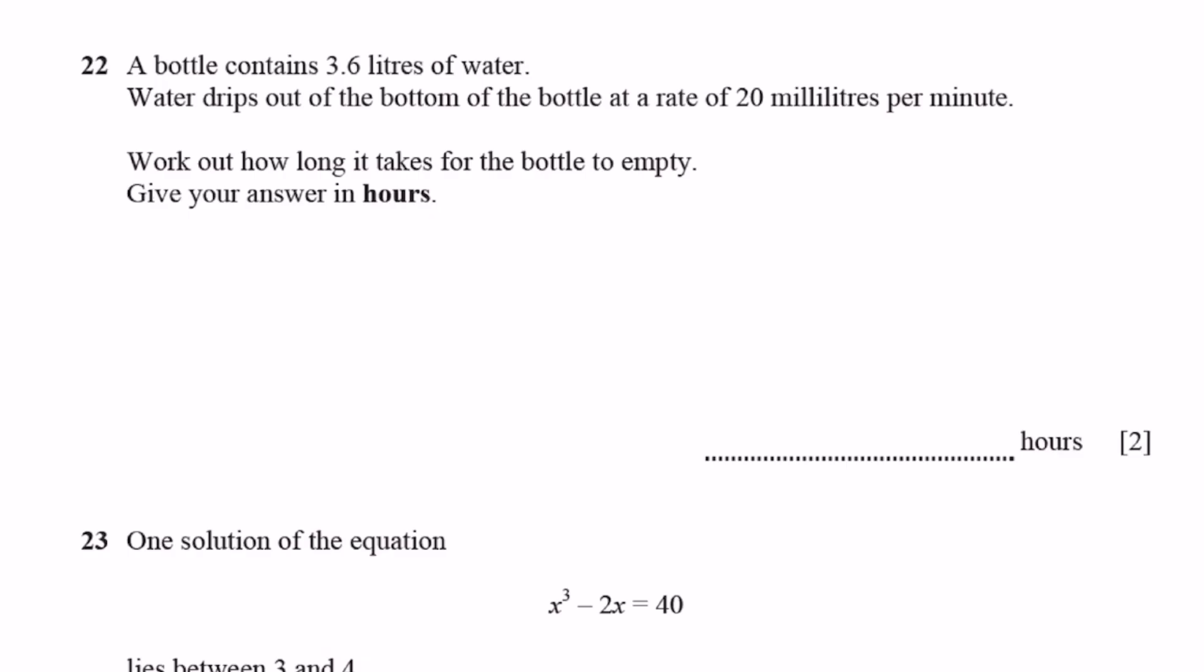Question 22. A bottle contains 3.6 liters of water. Water drips out the bottom at a rate of 20 milliliters per minute. Work out how long it takes for the bottle to empty. Give your answer in hours. 3.6 liters equals 3600 milliliters. In one minute, 20 milliliters is gone. So, 3600 by 20. That'll be 180 minutes, which equals 3 hours.